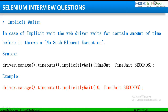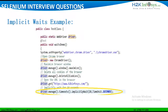Let us quickly look at a test script implementing implicit wait. I am first opening the Chrome browser, maximizing the browser window, and loading the H2K Infosys website using the get method. When the browser is loading all the web elements on the web page, I am asking the tool to implicitly wait for 10 seconds. This is how you can answer in your interview, explaining the definition of implicit wait and then providing an example if required.